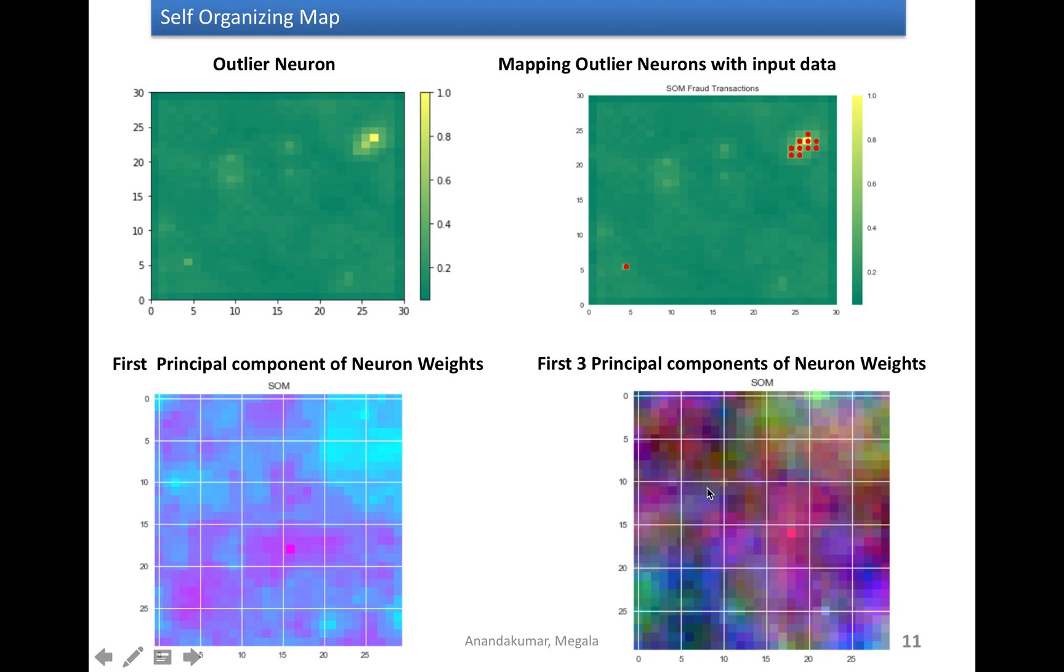These graphs are based on the PCA values. That means I reduced the dimension of the weight vectors of all the neurons. And then I used the first three principal components to draw this map. And it shows that there is some pattern existing in the transaction.